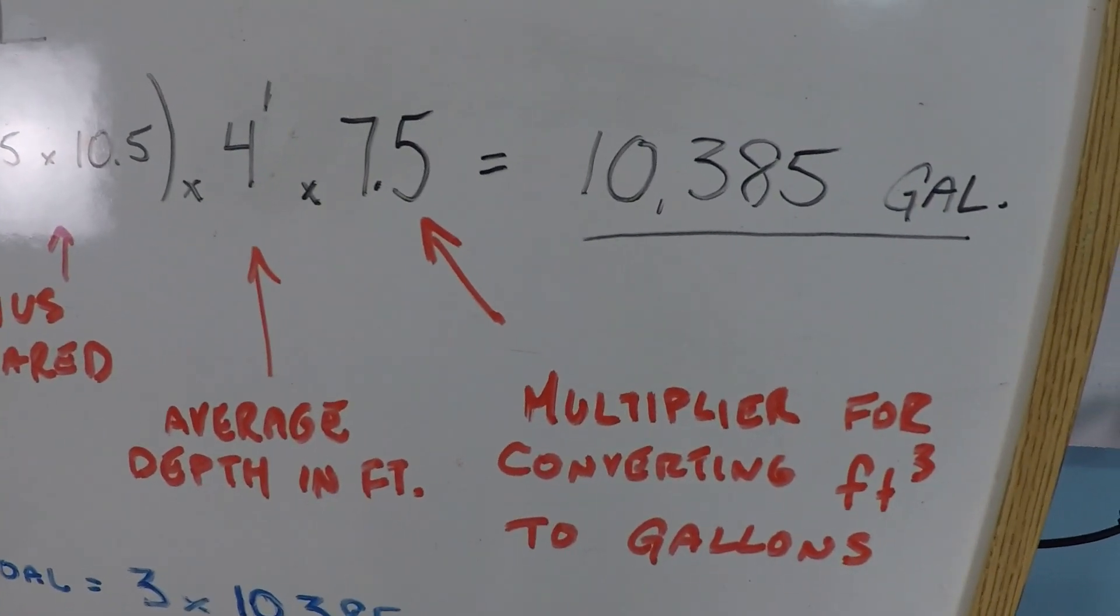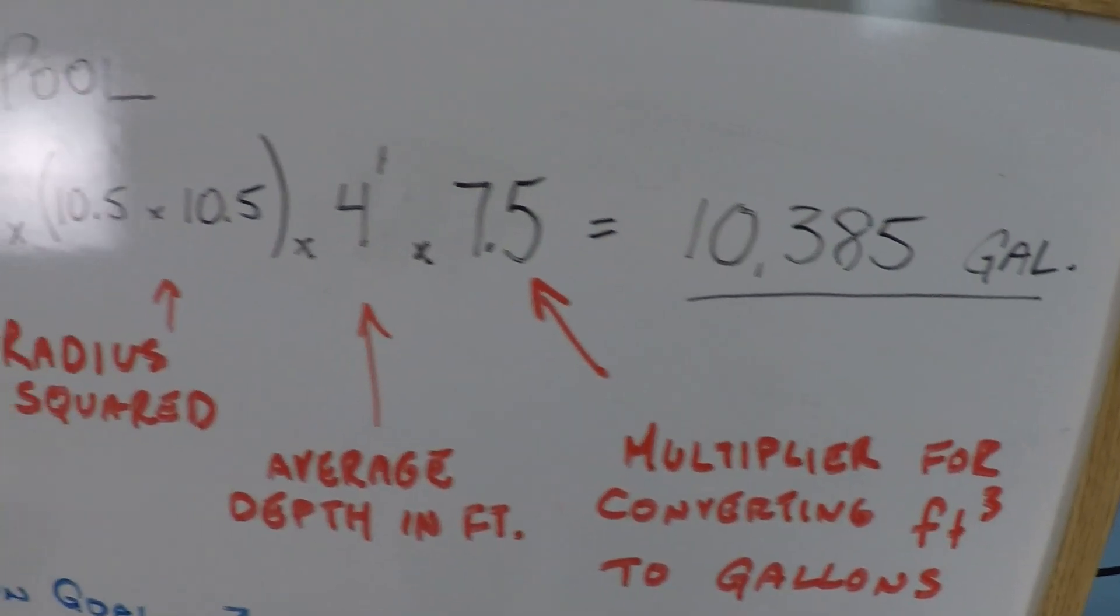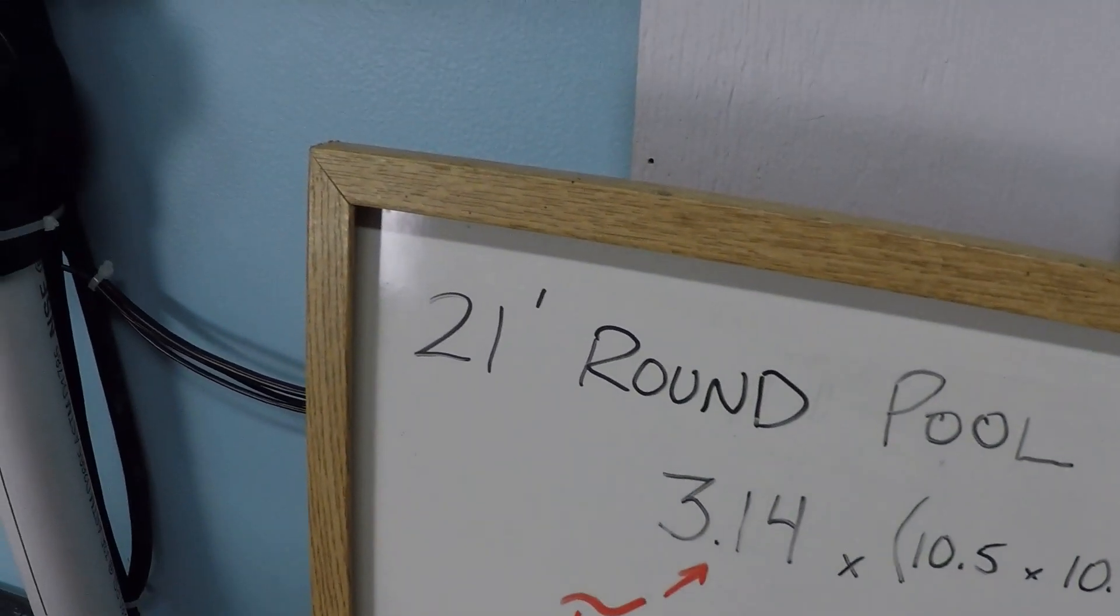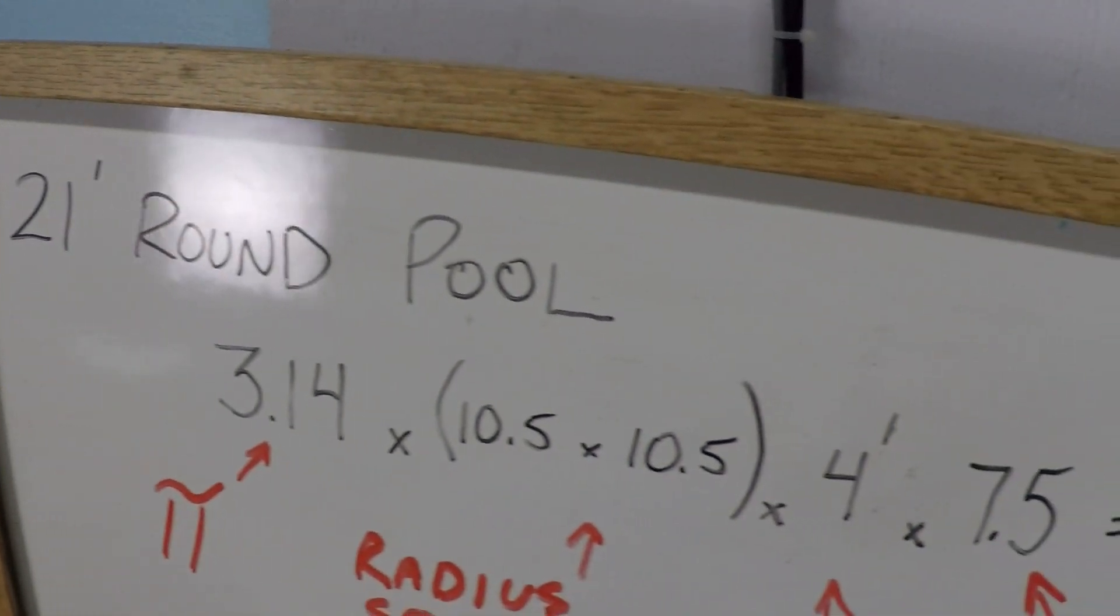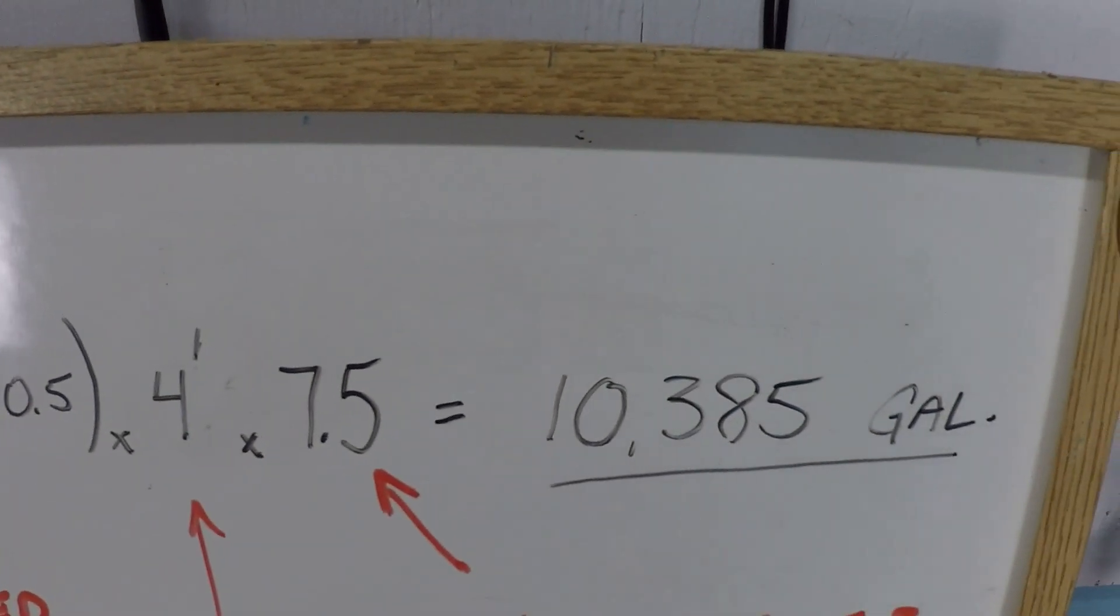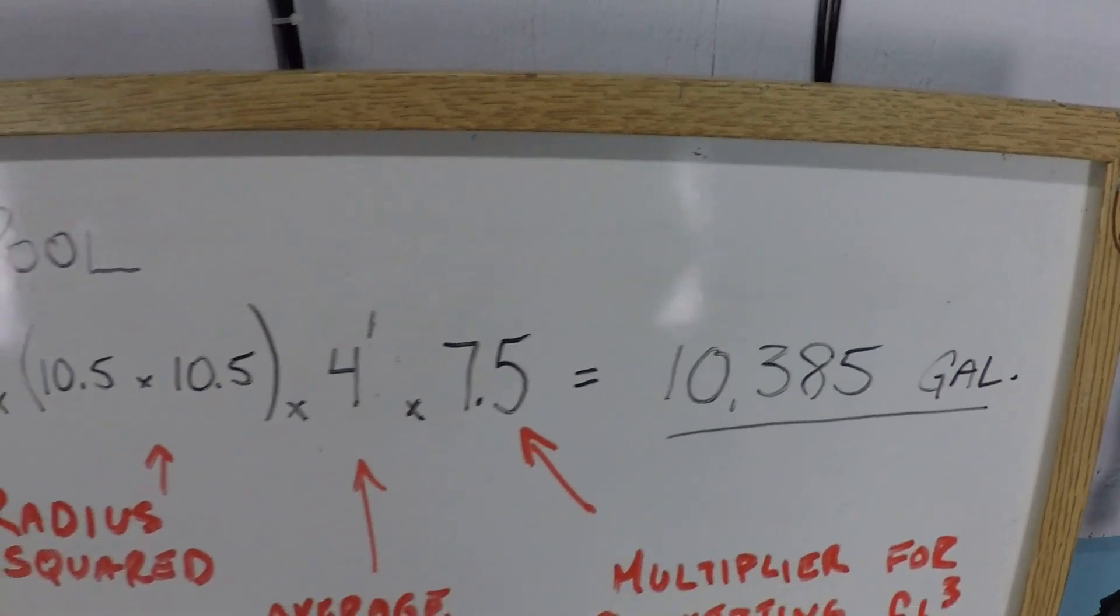7.5 is the multiplier to convert from cubic feet to gallons. So with our 21-foot round pool, 4-foot average depth, that's about 10,385 gallons for this example.